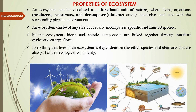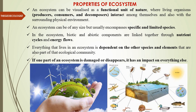Everything that lives in an ecosystem is dependent on the other species and elements — even non-living elements that are part of the ecological community. Dependency is the key property of ecosystem. If one part of the ecosystem is damaged or disappears — very crucial in terms of present conditions of biodiversity loss — it has an impact on everything else in the system. If any particular component of the system is affected, it will eventually affect the entire system.